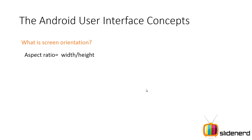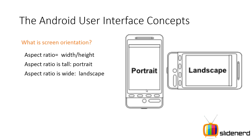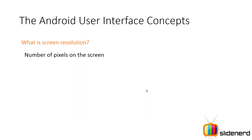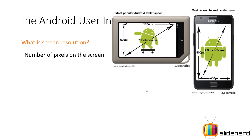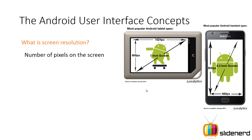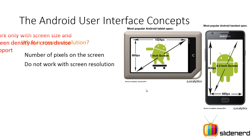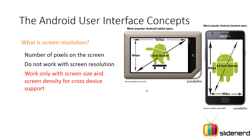Screen orientation is straightforward — portrait and landscape. Aspect ratio you are likely familiar with. Screen resolution is the number of pixels on the screen, but in Android you are not concerned with screen resolution because it varies heavily across many devices. If you design buttons and text views for the screen resolution of one particular device, you will run into problems. So don't work with screen resolution — work only with screen size and screen density.